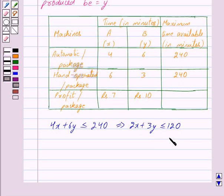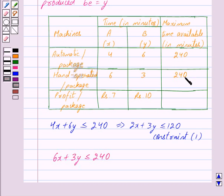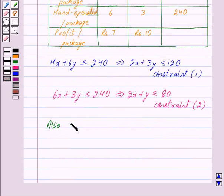Time taken on the hand-operated machine to produce a package of screws A is six minutes, so to produce X packages the time taken is 6X minutes. The time taken on the hand-operated machine to produce a package of screws B is three minutes, so to produce Y packages the time taken will be 3Y minutes. So the total time taken is 6X plus 3Y, and this is less than or equal to 240. This implies 2X plus Y is less than or equal to 80. This is our constraint two. Also we have X greater than or equal to zero and Y greater than or equal to zero, as the number of packages of screws A and B produced is greater than or equal to zero.